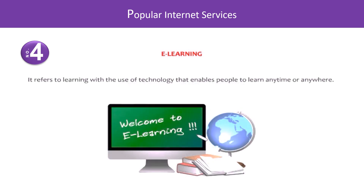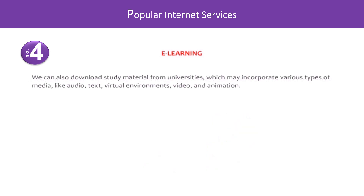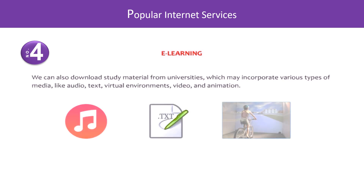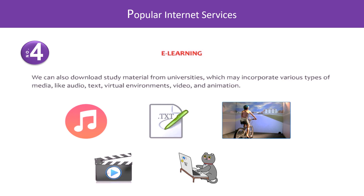Number four: E-learning. E-learning means electronic learning. It refers to learning with the use of technology that enables people to learn anytime or anywhere. You can also download study material from universities, which may incorporate various types of media like audio, text, virtual environments, video, and animation.